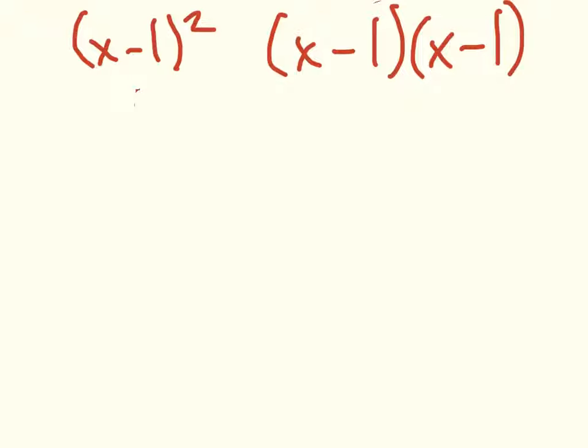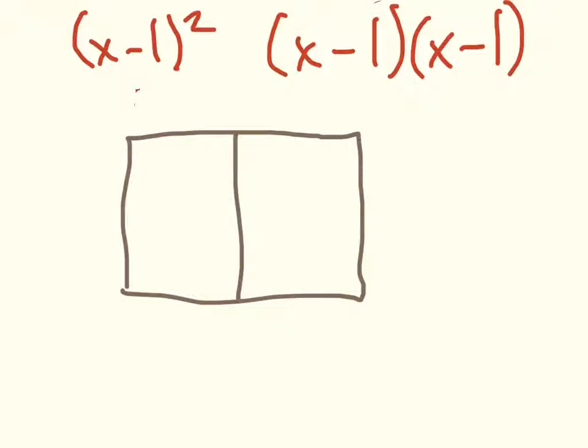So if we do the problem with the boxes, like we did for the first one. I'm going to take these terms and I'm going to bring them down. x right here, minus 1 here, x here, and minus 1 here.